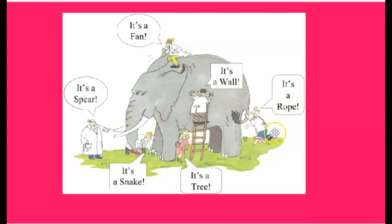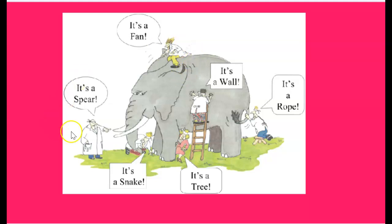This person right here thinks it's a rope, but he can't see the face. It's a different perspective. This person at the top can't see the big feet, so he thinks it's a fan and he's just feeling all of the wind. It's a different perspective — perspective is how they see the story. It is the how.